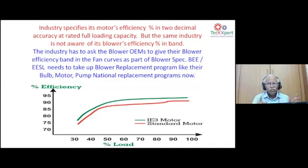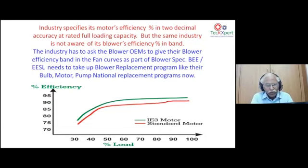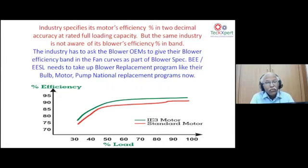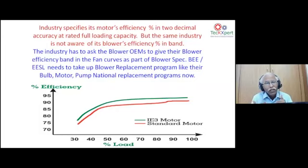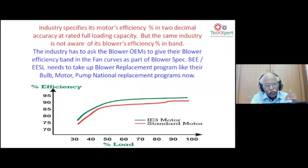Industries specify motor efficiency to two decimal places — 92.3%, 92.35% — and it's a flat efficiency curve from 55–95% load. But the same industries, whether large or MSME, are largely unaware of their blower's efficiency band. They don't know or haven't been informed of the blower's operating efficiency. The blower has a narrow efficiency band, and whether the blower and motor efficiencies are collectively matched for best combined performance is often not checked.